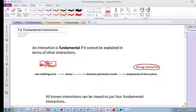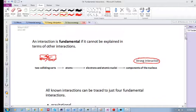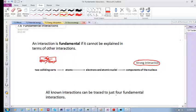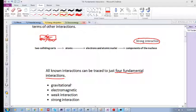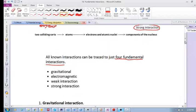So an interaction is fundamental if it cannot be explained in terms of other interactions. In the universe, we have four fundamental interactions. These are gravitational interaction, electromagnetic, weak, and strong interaction. We're quite familiar with these two, maybe not so familiar with these two. Let's have a look at them briefly.